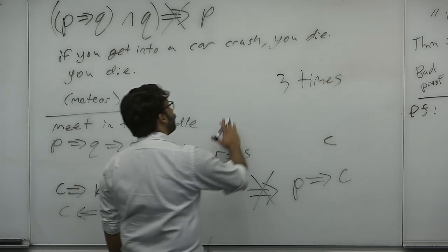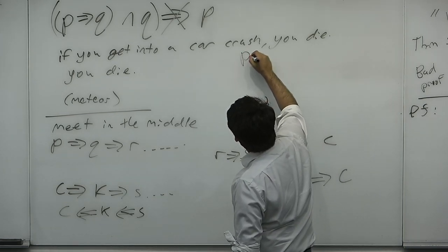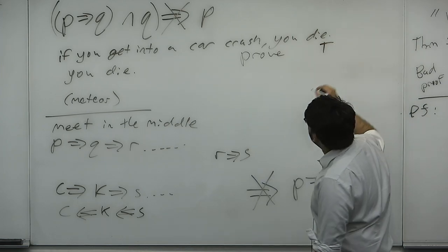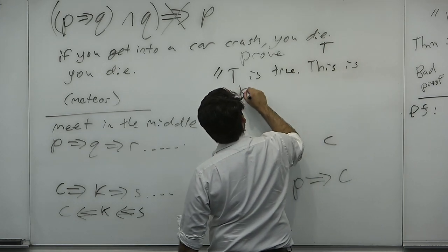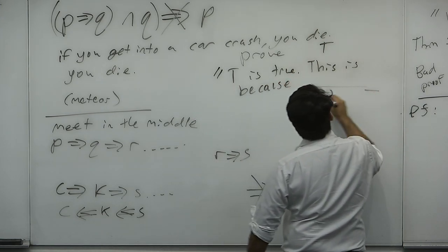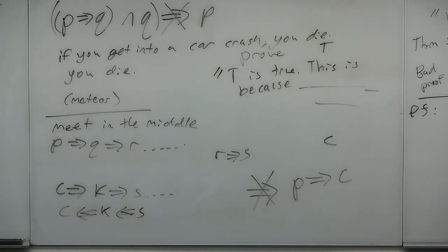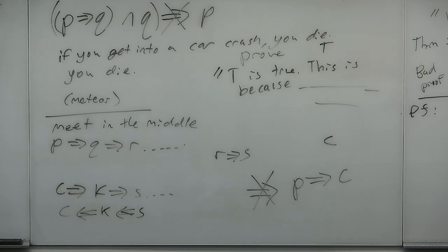Another proof writing problem — not even a fallacy, just annoying: you're trying to prove theorem T, and the proof says 'T is true, because...' followed by vague hand-waving. If you turn in something like this, that's my biggest pet peeve. You've already affirmed the conclusion. You can't say it's true and then explain why it's true — you have to explain the thought process, and then the reader must be able to conclude it's true.